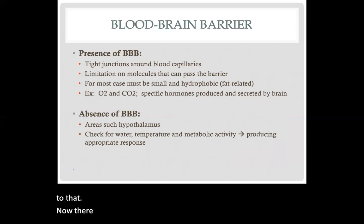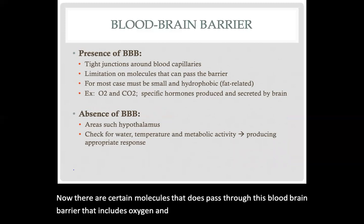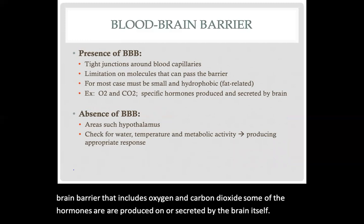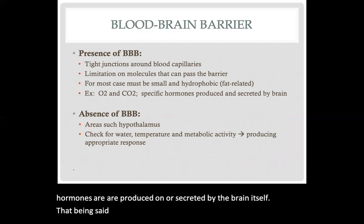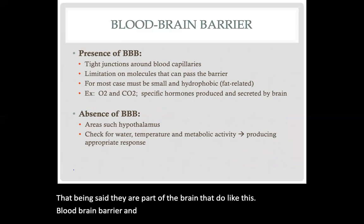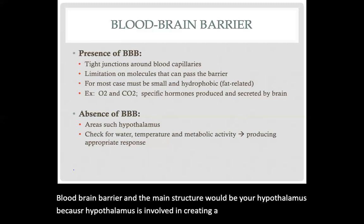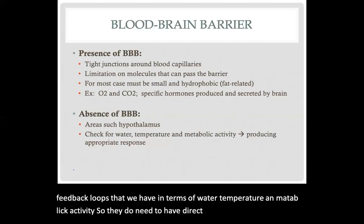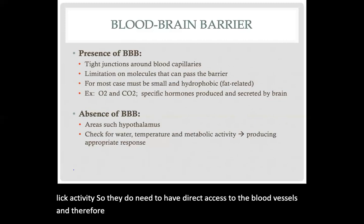There are certain molecules that do pass through this blood-brain barrier, including oxygen and carbon dioxide, and some hormones produced and secreted by the brain itself. That being said, there are parts of the brain that lack this blood-brain barrier — the main structure being your hypothalamus, because the hypothalamus is involved in creating many homeostatic feedback loops related to water, temperature, and metabolic activity. It needs direct access to the blood vessels to monitor that everything is running smoothly.